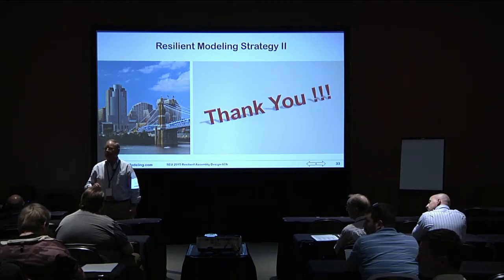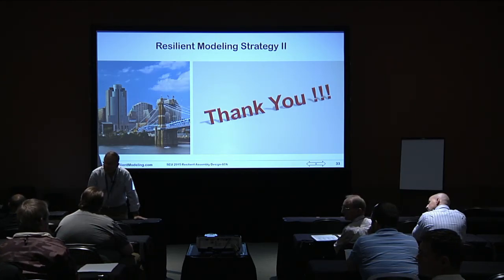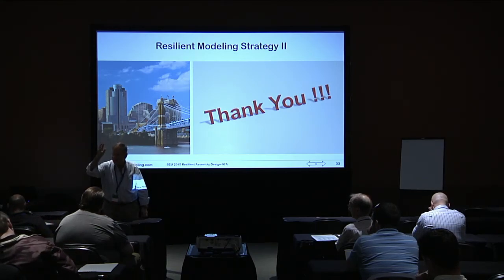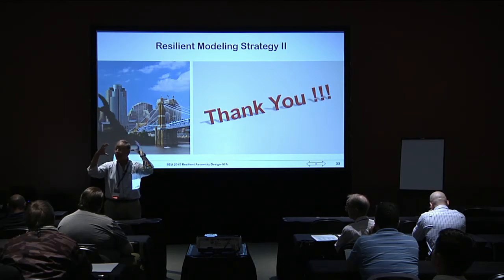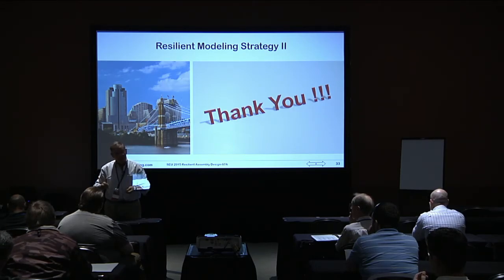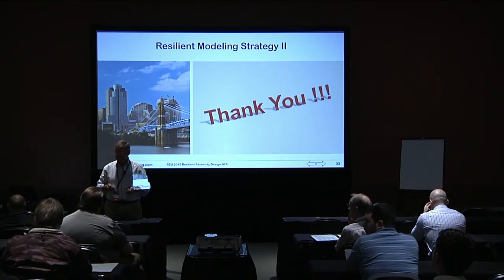There are no constraints in a multi-body model — you just start making it. When you're making the cap, suppress the rod so you're just looking at the cap and the skeleton, and you build it like it was the first part. The coordinate system is always the same origin for each part. You could assemble by coordinate systems and get a perfect fit, but in reality I'd use mates, because then I can get an exploded view.